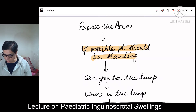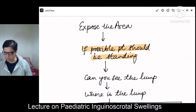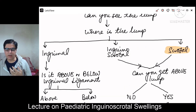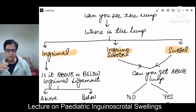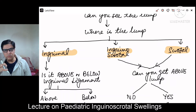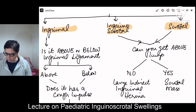Look at the groin and see if you can see the lump physically protruding. Then the next step is to feel the lump — wear gloves and physically feel for it. Determine whether it is inguinal, inguino-scrotal, or purely scrotal. If the swelling is only in the inguinal canal, call it an inguinal swelling. If it is partly in the inguinal canal and partly in the scrotal sac, call it inguino-scrotal. If you can reach above the swelling and it is confined to the scrotal sac, it is a scrotal swelling.